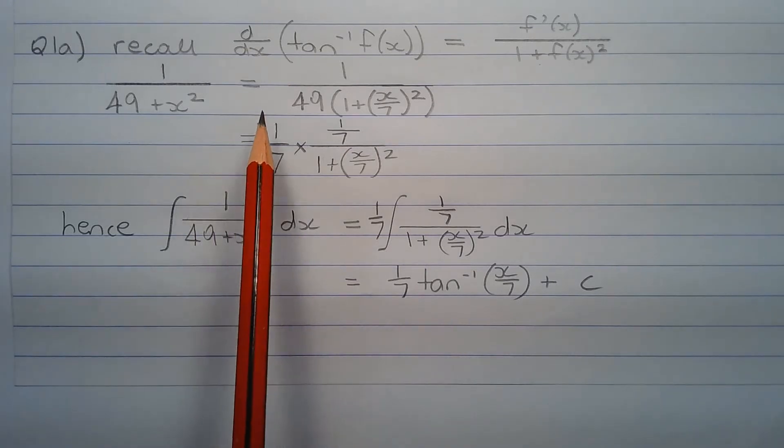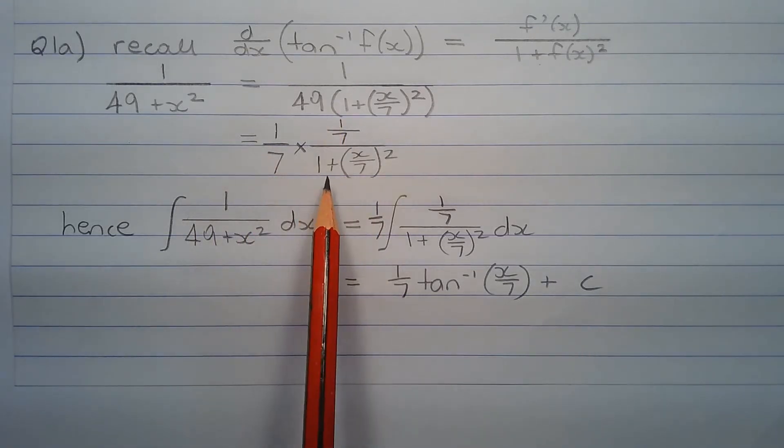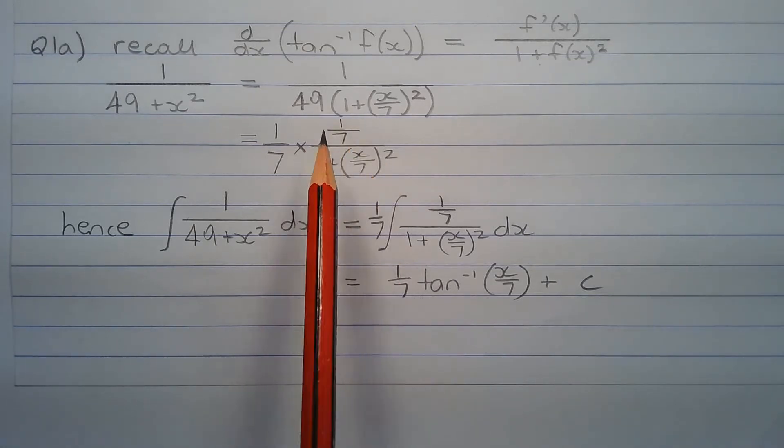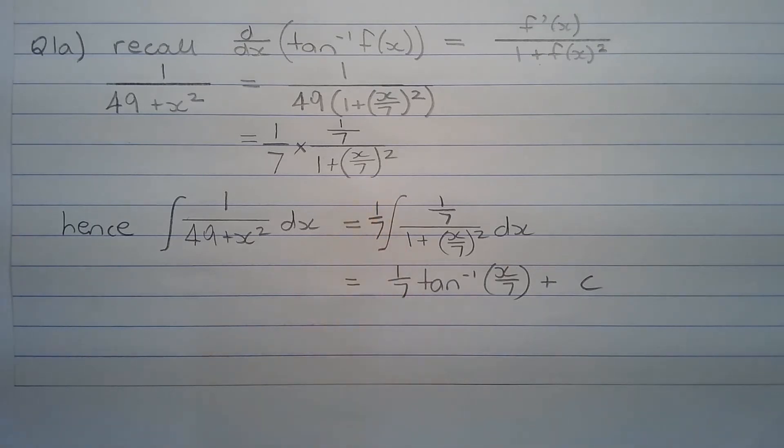Now that equals 1 over 7 times 1 over 7 over 1 plus x over 7 squared. Notice that the numerator is the derivative of x over 7, which is our f(x).